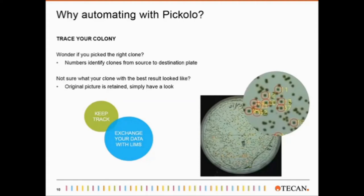Here we'll start with our first poll. The possible answers are: first, I am already using automated colony picking in my lab, but I am looking for alternatives. Two, I am considering to automate colony picking in the near future to increase throughput. Three, I would like to increase reproducibility by automating colony picking. And four, I am currently colony picking by hand and will continue to do so in the future.